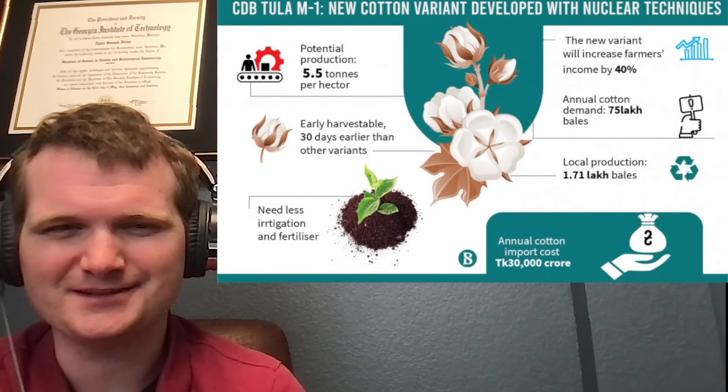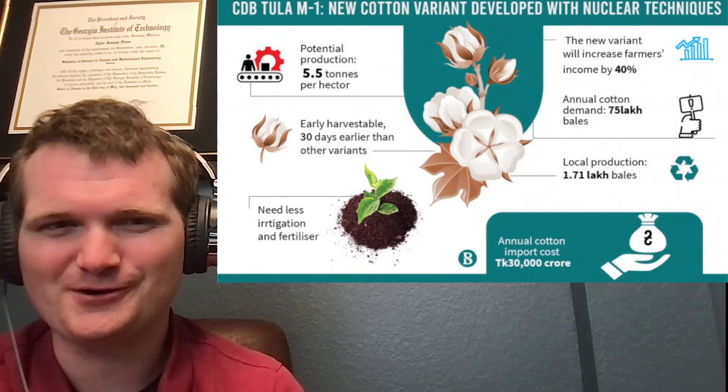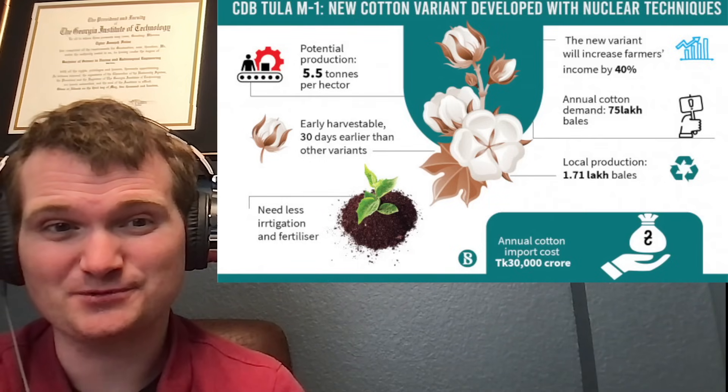cotton that is less reliant on irrigation and fertilizer, which can be hard to come by during the drought season in Pakistan. This is one aspect that crazy nuclear mutations can be used for good. By the way, I'm saying this in jest. You're not going to cause mutations to turn somebody into the Hulk with gamma radiation in real life, but you can use it to make more cotton, which is pretty cool.